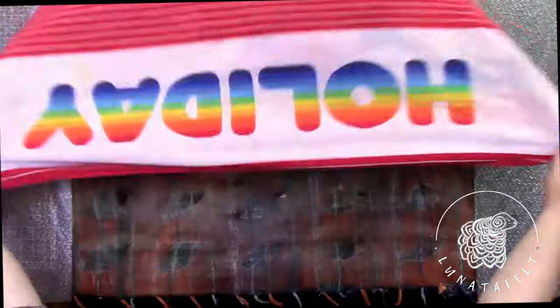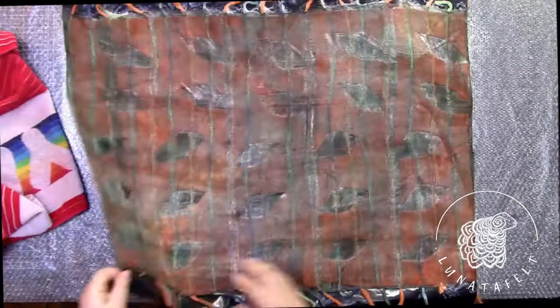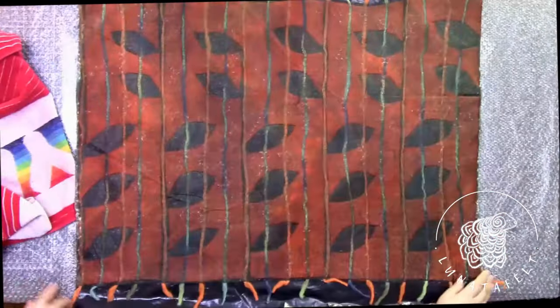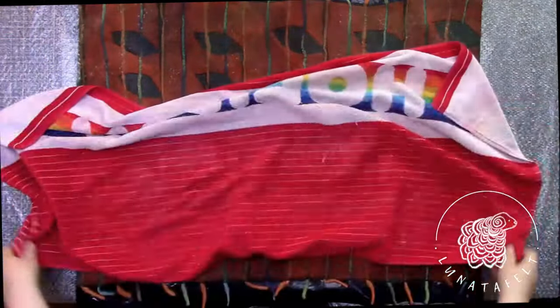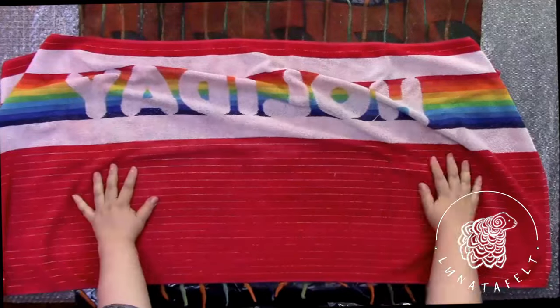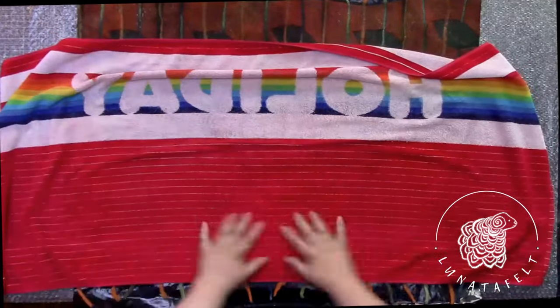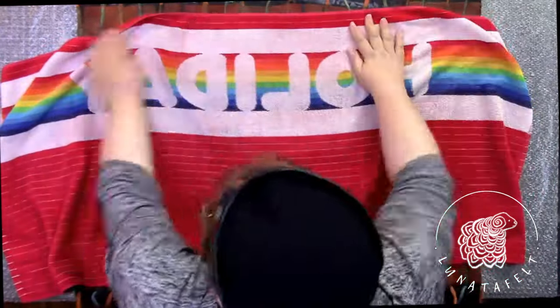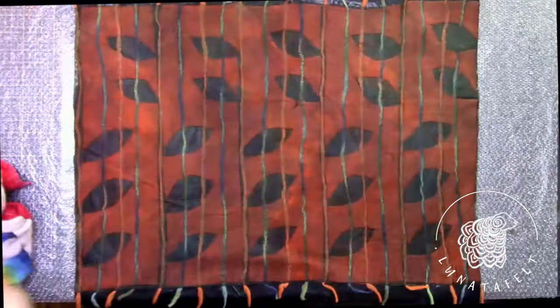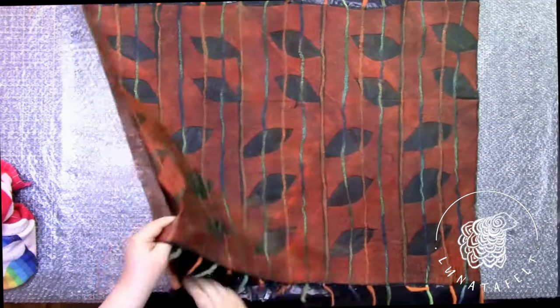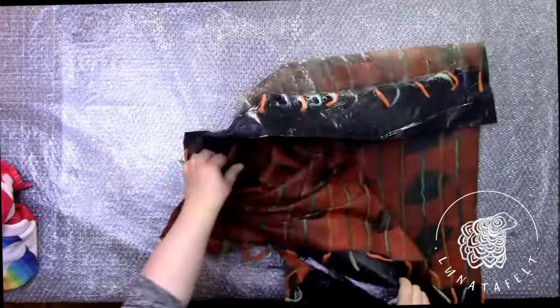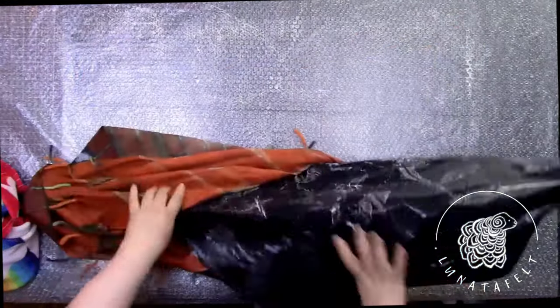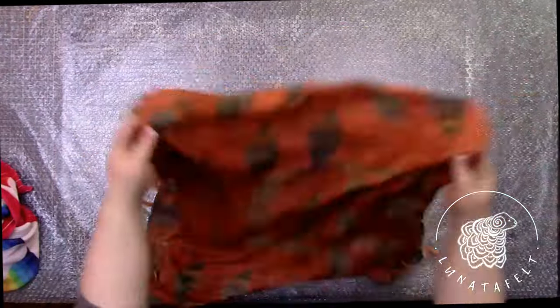Now I will remove the snood from the template and finish felting it by hand without the template. If you rubbed and sanded well, nothing will fall apart. Although, of course, this is still a blank at the intermediate stage of readiness. I remove excess water with a towel because extra water is not needed at this stage. Just blot with a cotton towel. Carefully, with a confident motion, I pull the template out of the snood without making abrupt movements to avoid damaging it.